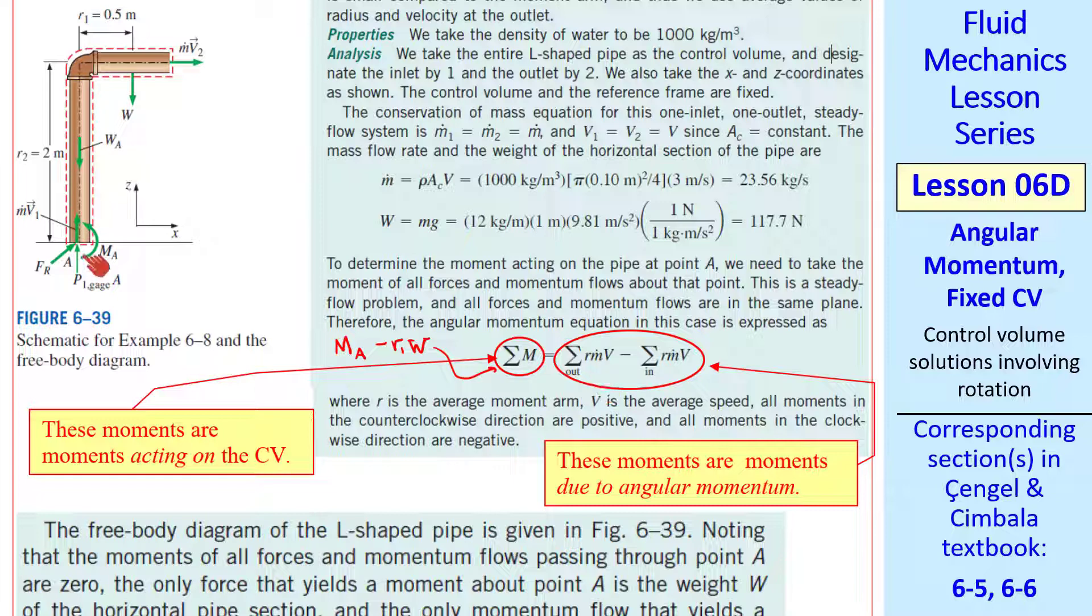On the right, there's only one inlet. But since point A is in the middle of that inlet, it contributes nothing to this moment. So that term goes away. There is an outlet with some m dot and some V and a moment arm, R2, about point A. Since it's an outlet, this is positive, in this case in the clockwise direction. So we include a negative sign here since all our moments are considered positive counterclockwise.